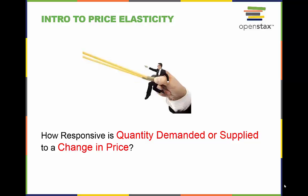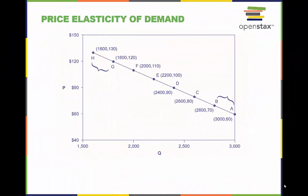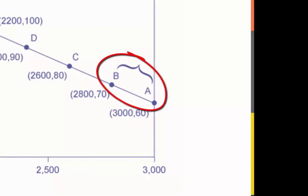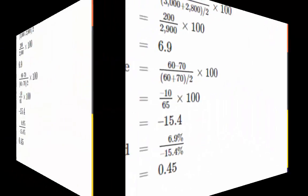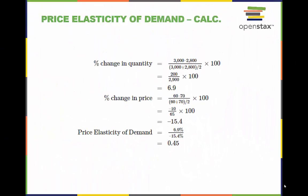In economics, this analogy helps us understand how the quantity stretches or responds to the force of changing price. The price elasticity of demand is calculated as the percentage change in quantity divided by the percentage change in price. Let's first look at the elasticity between point A and point B. First, we calculate the percentage change in quantity.